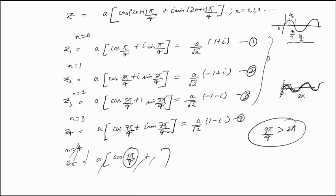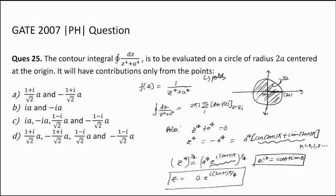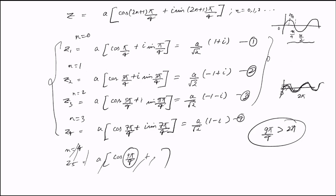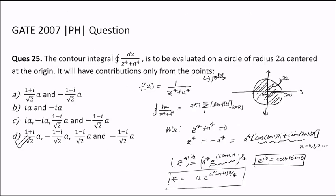So the answer is that all four poles — (a/√2)(1+i), (a/√2)(−1+i), (a/√2)(−1−i), (a/√2)(1−i) — contribute to the contour integral. These points lie well within the radius of 2a, since a/√2 < 2a. Therefore, option D is the correct answer. Thank you for watching this video.